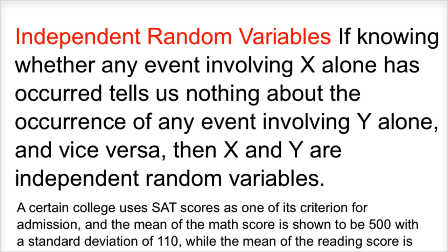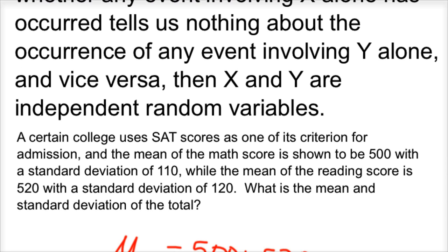The first thing we need to talk about is independent random variables. If knowing whether any event involving X alone has occurred tells us nothing about the occurrence of any event involving Y alone, and vice versa, then X and Y are independent random variables. One cannot predict the other, or vice versa.